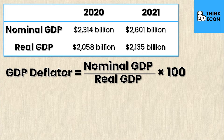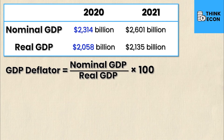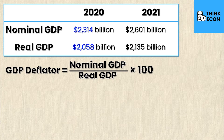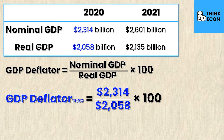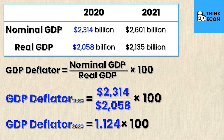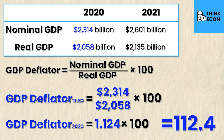The formula for the GDP deflator is simply nominal GDP divided by real GDP times 100. You might be thinking that's super easy, and to be honest it kind of is — the interpreting of the GDP deflator is the tougher part. Let's begin by calculating it for 2020: plugging in the values we get 2314 over 2058 times 100, which gives us 1.124, and multiplying by 100 we get a GDP deflator of 112.4 for 2020.